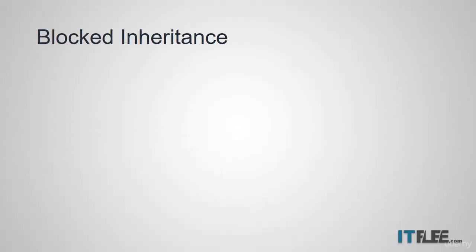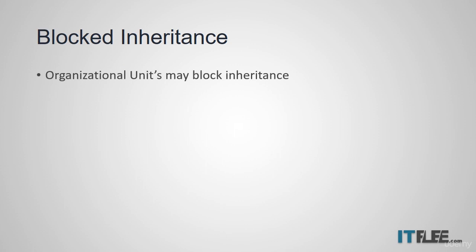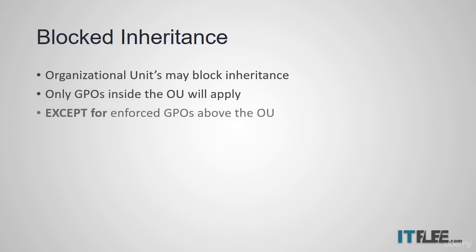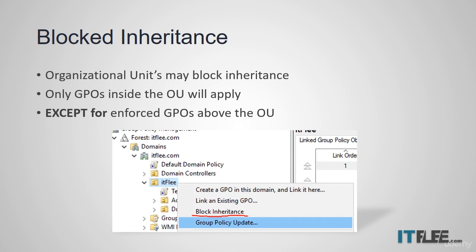Within group policy there is something called blocked inheritance. This term applies to organizational units — an OU can block its inheritance, which means only GPOs inside that OU will apply, except for enforced GPOs that are above the OU. To block inheritance, you simply right-click on the OU and choose block inheritance. In this example, the test GPO would still apply, but the default domain policy would not.